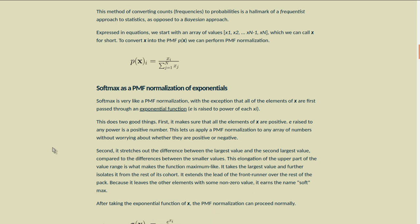Softmax is very like a PMF normalization, with the exception that all of the elements x are first passed through an exponential function. That is, e raised to the power of each element of x. This does two good things. First, it makes sure that all the elements of x are positive. e raised to any power is a positive number. This lets us apply a PMF normalization to any array of numbers without worrying about whether they are positive or negative.